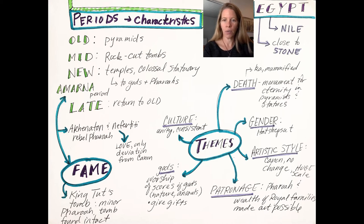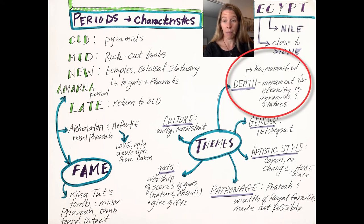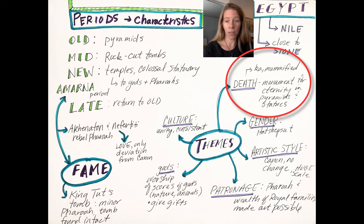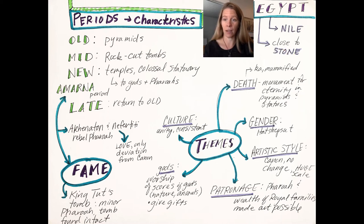Other themes we're going to explore revolve a lot around death. The ka — the corpse — is mummified. This is the first time in a society that we have seen this. Typically corpses were buried with their body intact or they were cremated, like we saw at Stonehenge where bodies were cremated. The treatment of these bodies is extremely important.